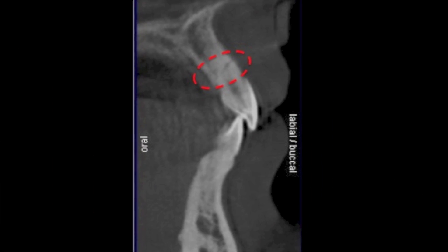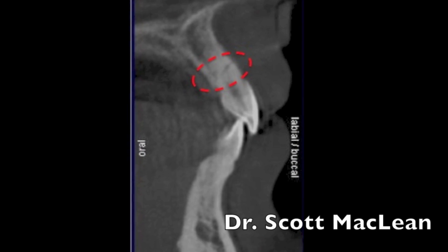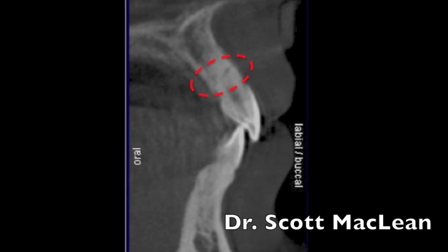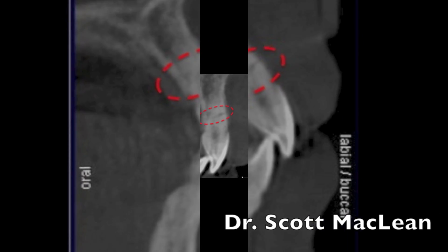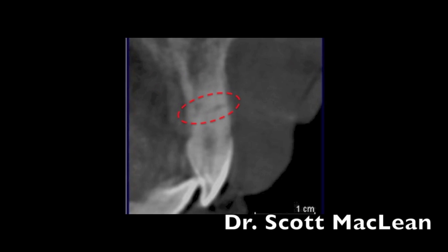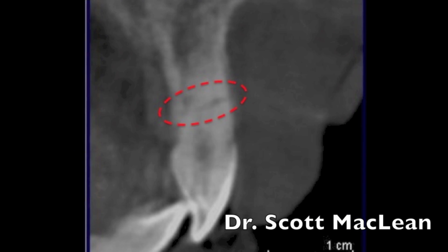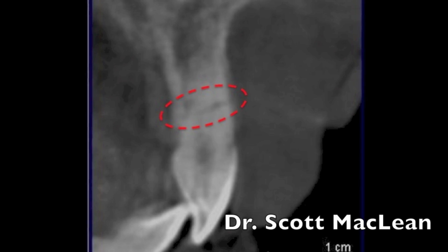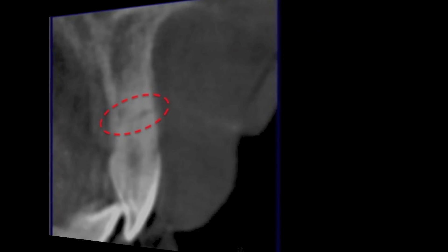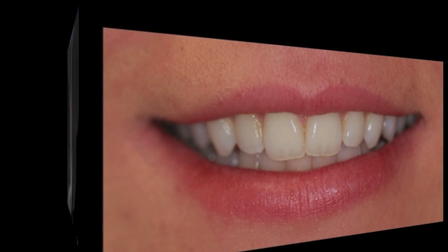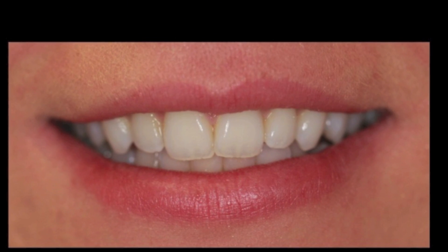If you look at the problem — she was in a sporting accident and cracked her front central. We can see that the fracture is up really quite high below the zone of attachment, so this tooth is going to need to be extracted. We did our due diligence, sent it to endodontics and had it evaluated, but they said there just wasn't anything we could do in this case except bridge or place an implant.